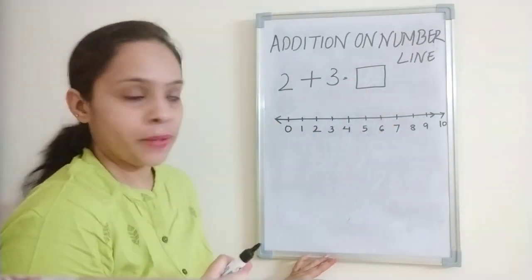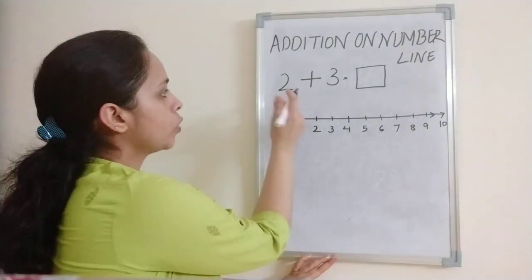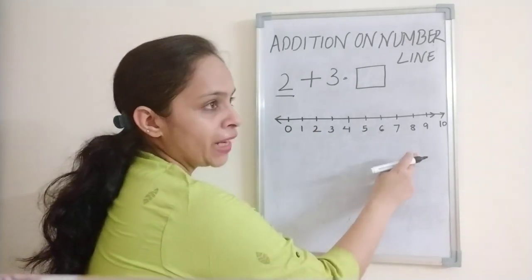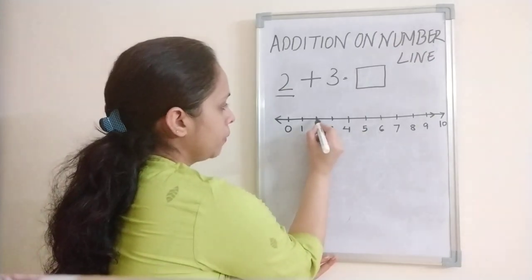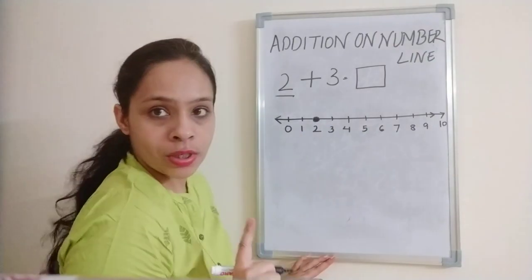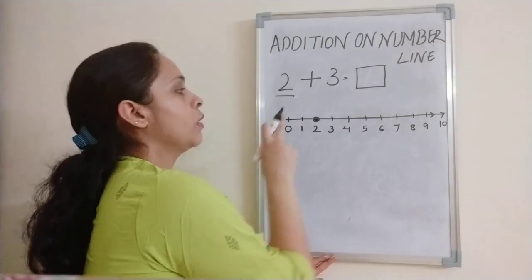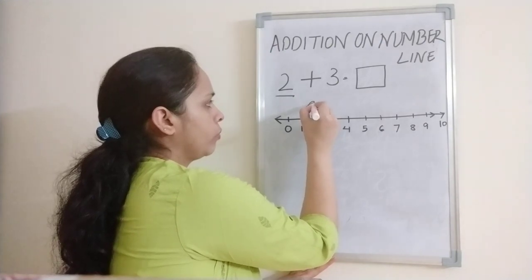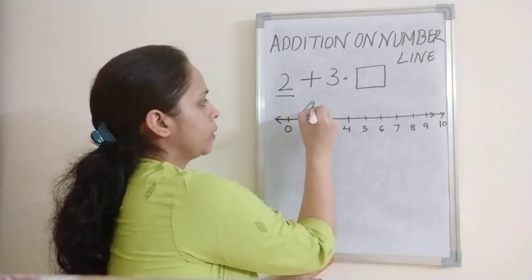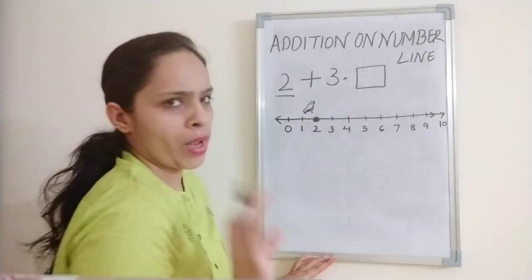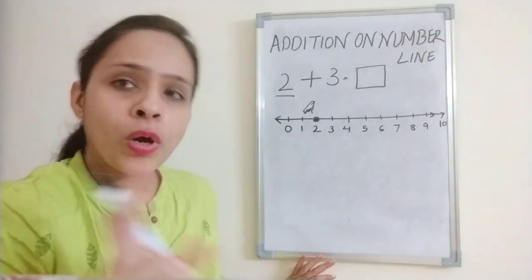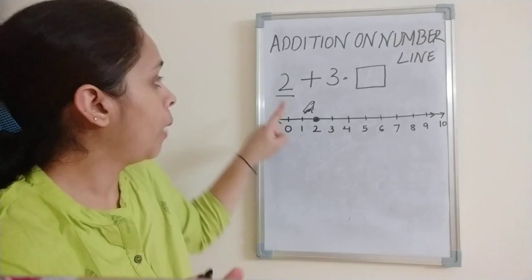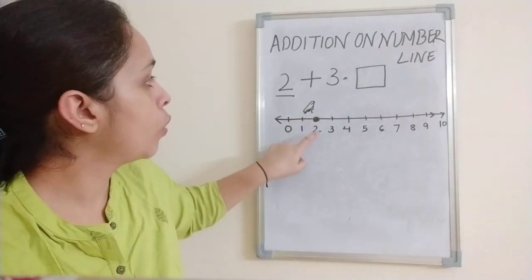Two plus three. So first of all, what will we do? The first number is two. So on the number line we look at where two is written. Two is here. We put a dot here. Now suppose ma'am has drawn a frog here. Or whatever you want to imagine — a bird, or you yourself are sitting on this number line. The frog is sitting on number two.